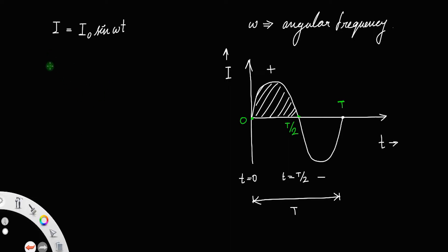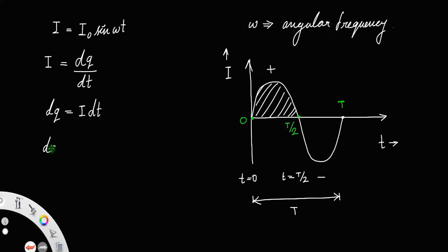By definition, current I is equal to dq/dt — that is, current is always the time rate of flow of charge through any cross section. Here dq means charge element and dt means time. So we can rearrange to write dq = i·dt.